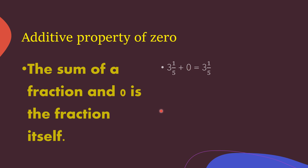So these are the three properties: commutative, grouping, and additive property of zero. It is a very small topic. Learn it, try the questions in the form of fill in the blanks, solve them, and practice. Goodbye.